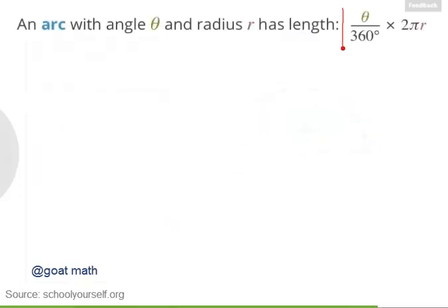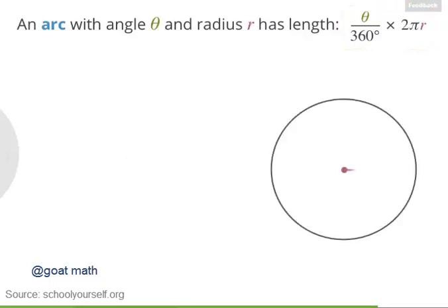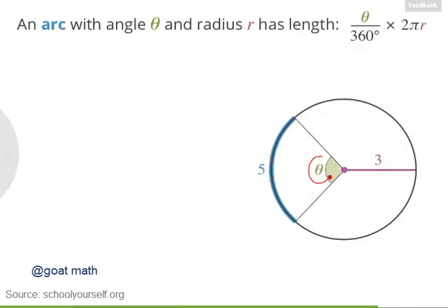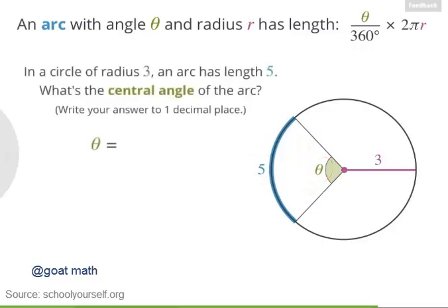Here's the formula you found. For your final challenge, suppose you have a circle whose radius is 3, and an arc whose length is 5. Let's call this arc's central angle theta. Can you use this formula to calculate theta? Give your answer to at least one decimal place.